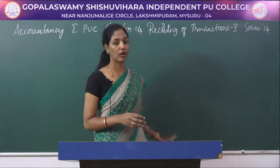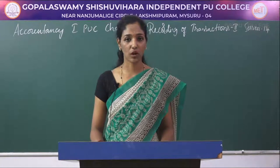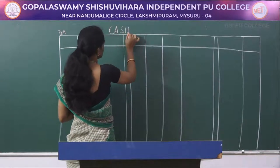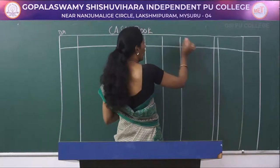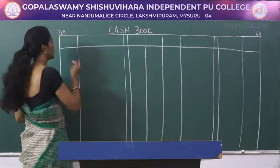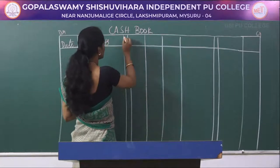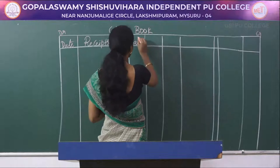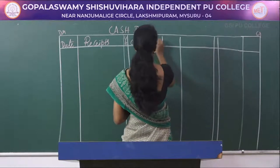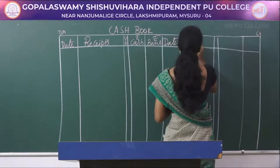Now let's see how to solve this problem. First, write the format of the double column cash book. On the left side write Dr, and on the top right corner write Cr. The columns are: date, receipts, ledger folio, cash amount, and bank amount. On the right side write: date, payments, ledger folio, cash, and bank.